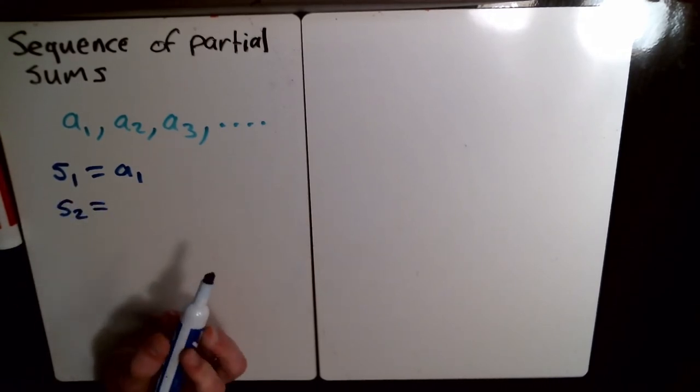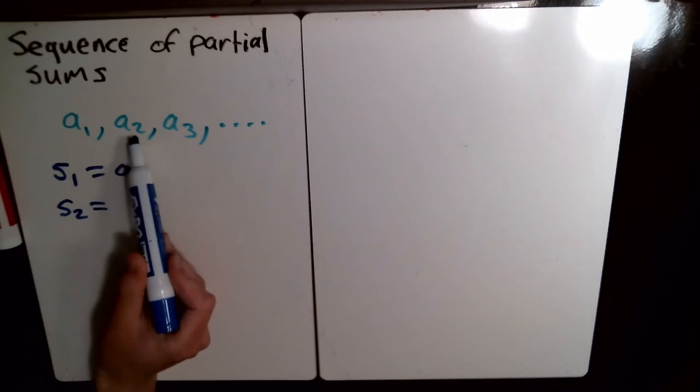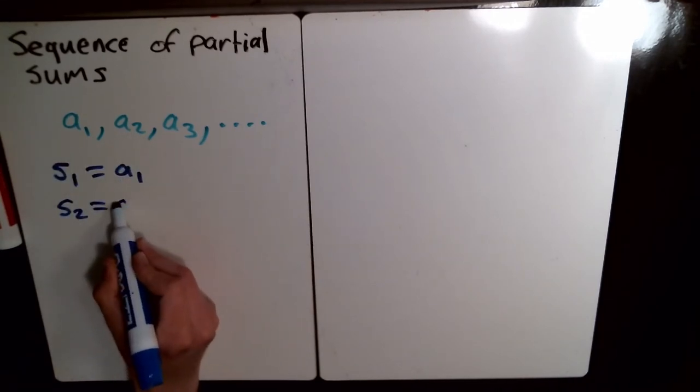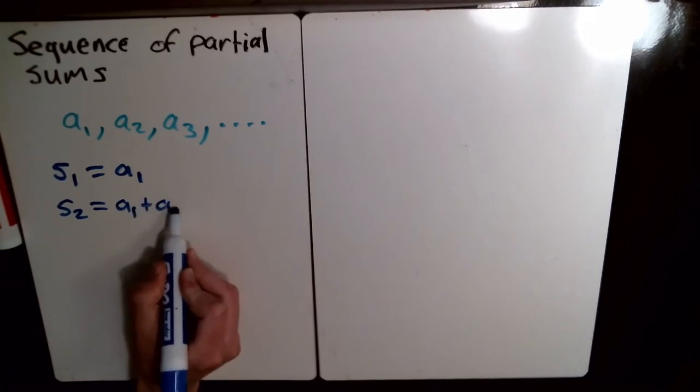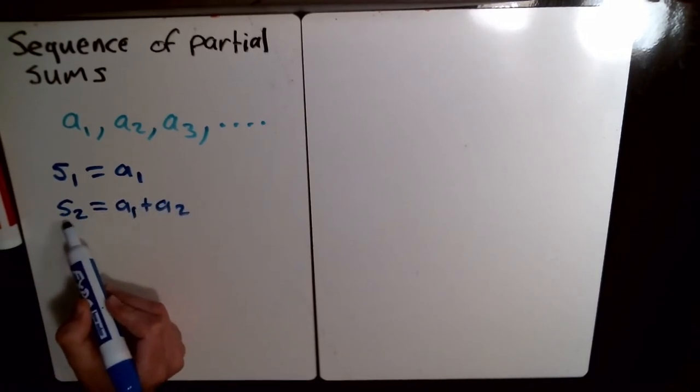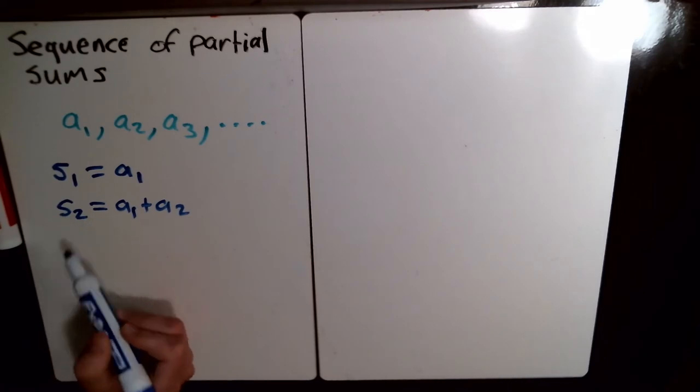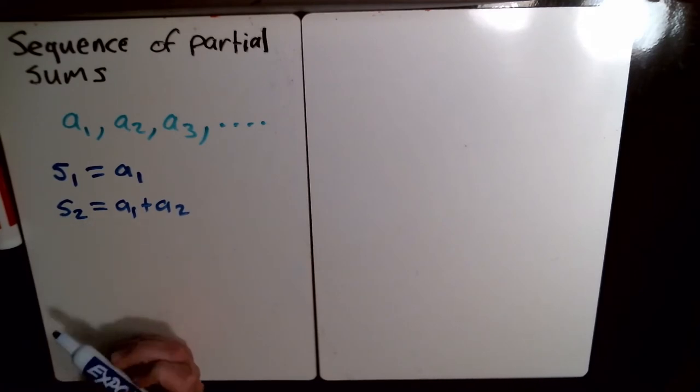For s sub 2, you're going to take the first two terms of this sequence and add them together. So that's the second term of the sequence of partial sums.